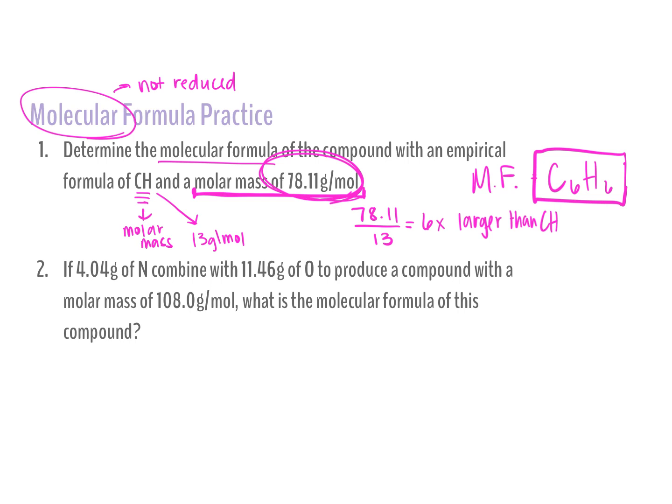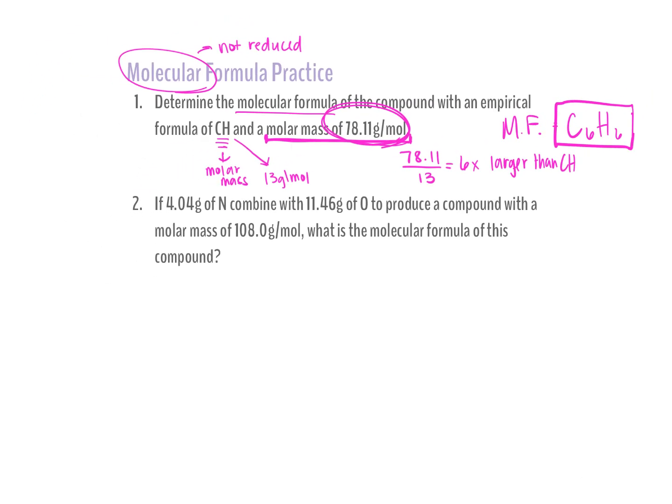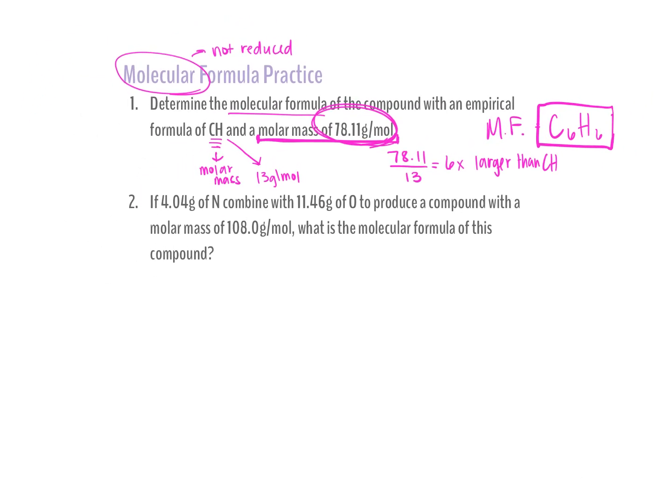In some questions, you have to do the whole thing — build the empirical formula and then find the molecular. This last problem asks you to do both: if 4.04 grams of nitrogen combine with 11.46 grams of oxygen to produce a compound with a molar mass of 108, what is the molecular formula? That means we have to find the empirical formula first.